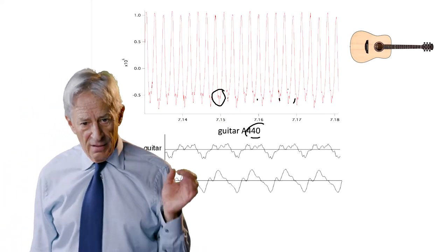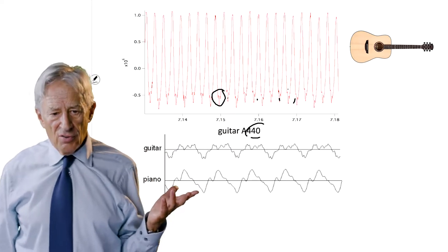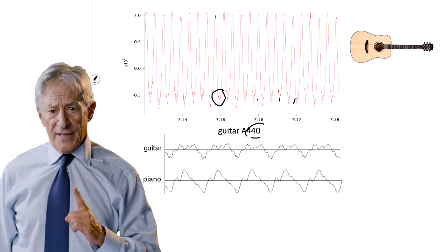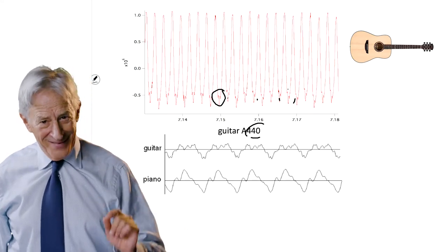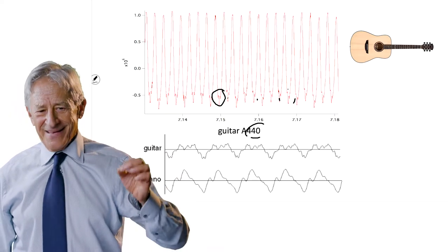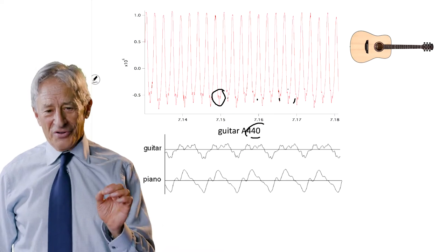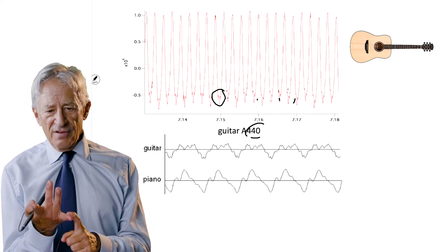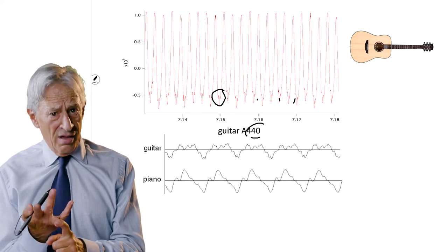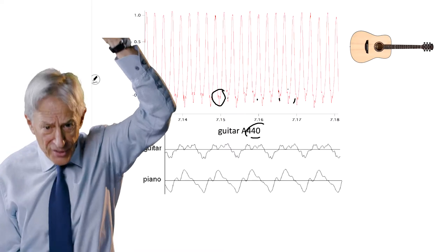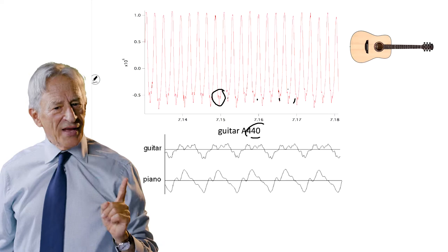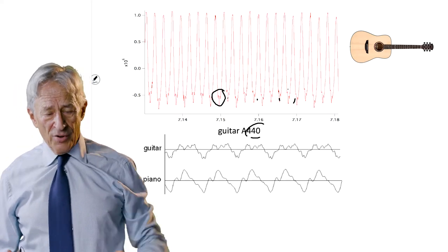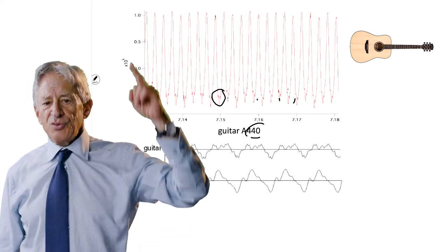The critical thing about a musical instrument like a guitar or a piano is that the frequency of the note it plays cannot depend upon how hard you strike the key or the string. That would be a terrible musical instrument. If you pluck harder, you want the same frequency, the same waveform, and a higher amplitude — because you struck it harder. That's exactly what we mean by a stable oscillation, where frequency is independent of amplitude.